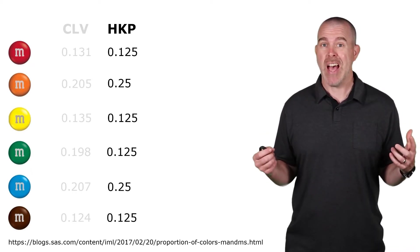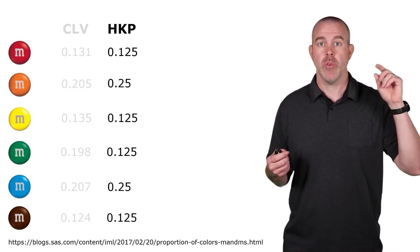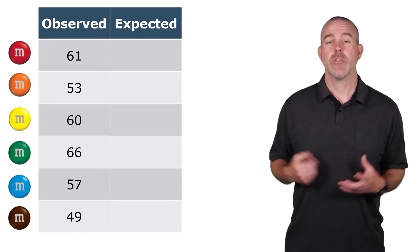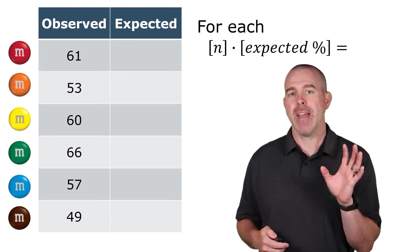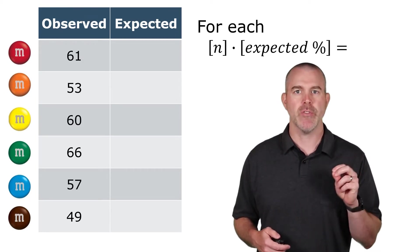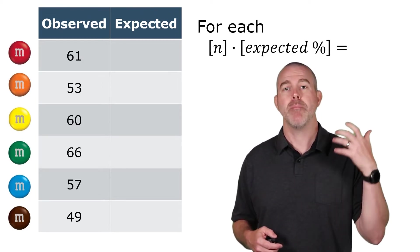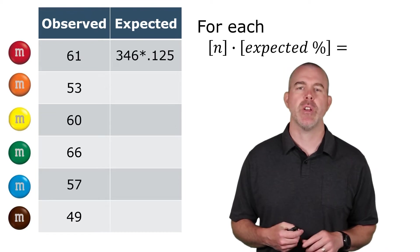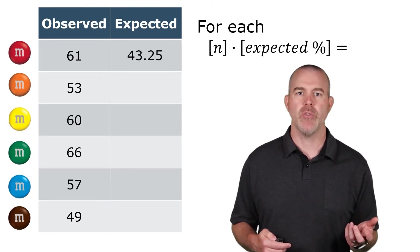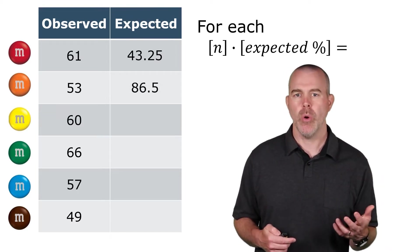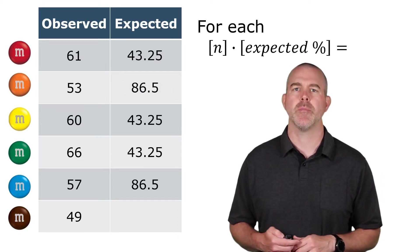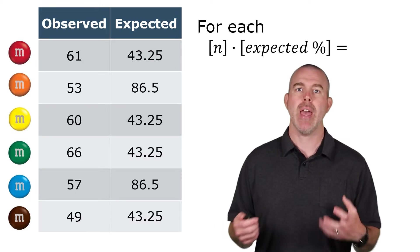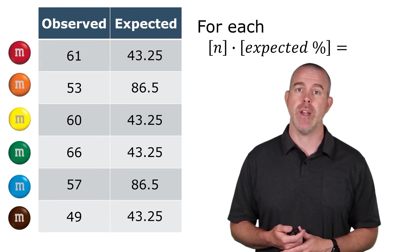So, what we're going to do is we're going to test do our proportions, do our counts meet what we would expect if the proportions are according to that distribution. So, I have my observed counts from up in the kitchen. For the expected, what we're going to do is take the total, I believe it's 346, and then multiply by that expected percentage from the previous 2017 numbers. So, for the red, it's 346 times one-eighth. That's 43.25. For the orange, it's times a quarter. And then, I think the only other one that was a quarter was blue. The other ones were all one-eighth. So, now we have observed counts for each one, the actual counts in the M&M bag. And then, what we would expect if they followed those 2017 numbers.